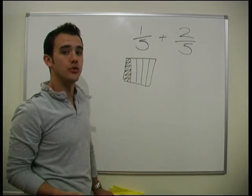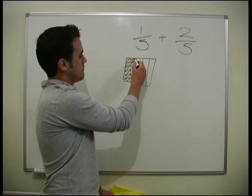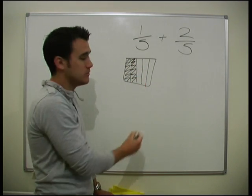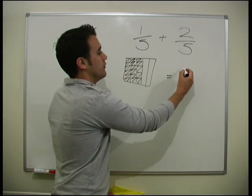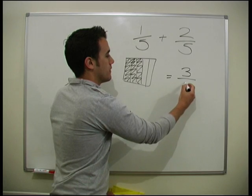I need to add on 2 fifths. So there's add on 1. And there's add on 2. How many of those have I got? I've got 3. So it equals 3 fifths.